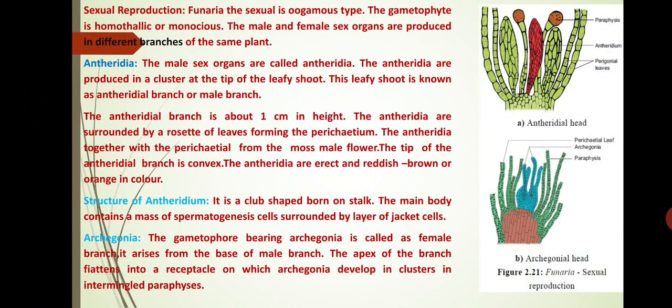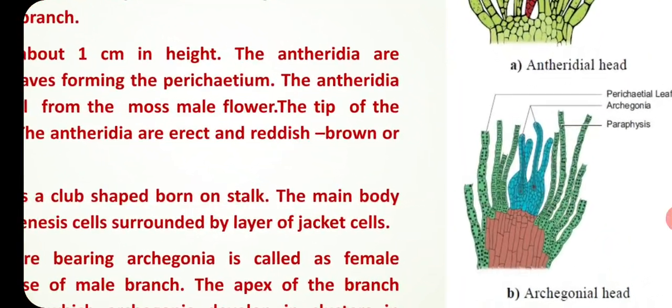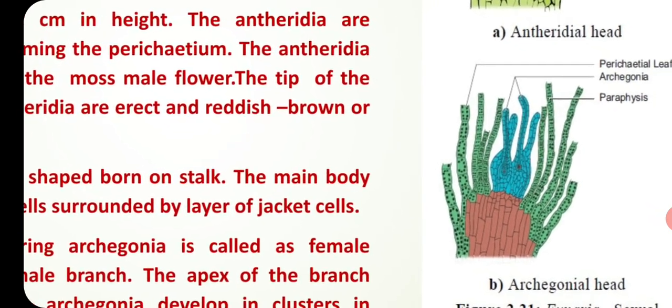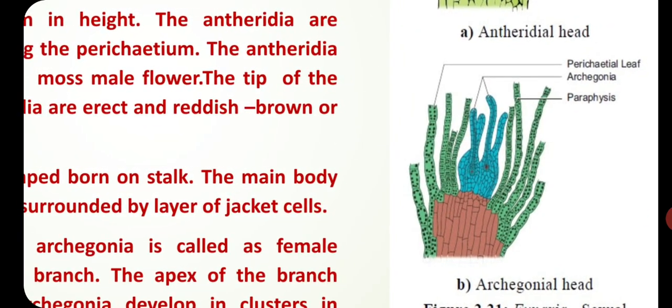Next we discuss about the archegonia. The gametophyte branch bearing archegonia is called the female branch. It arises from the base of the male branch. The apex of the branch is flattened into a receptacle on which archegonia develop in clusters interspersed with paraphyses.